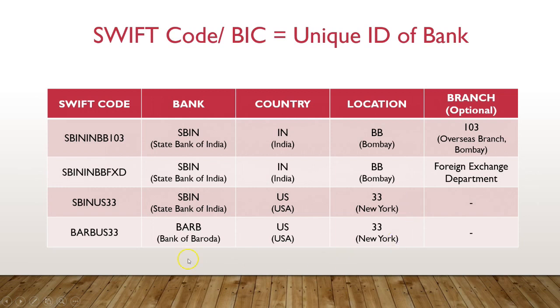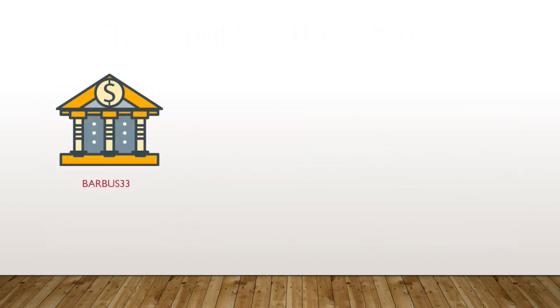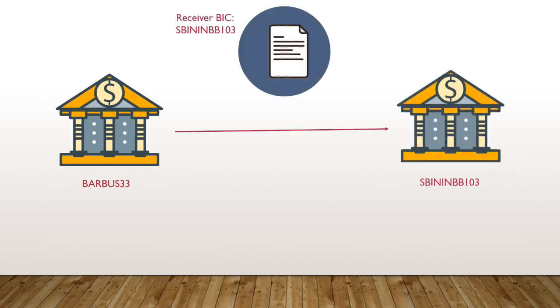The next one shown is Bank of Baroda in New York. As you can see, the branch code is optional as these banks have only one branch in New York. So if Bank of Baroda in New York sends a SWIFT message to SBI's overseas branch in Mumbai, it will put SBININBB103 in the receiver field and it will reach the branch in encrypted format within minutes.